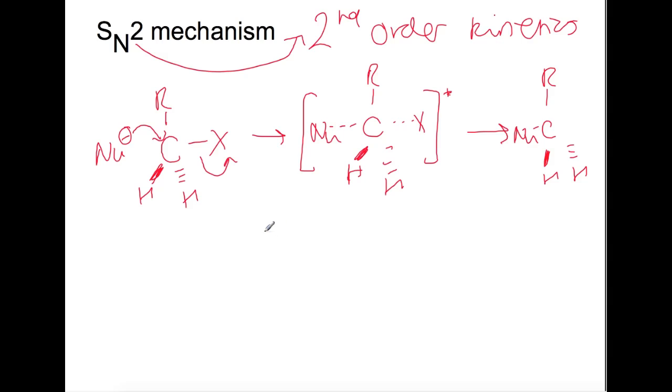Primary haloalkanes undergo the SN2 mechanism as there is less steric hindrance around about the electrophilic carbon where the nucleophile attacks. And also, if this were to have the X come off as a halide ion, there is little there to stabilize the carbocation that would form.